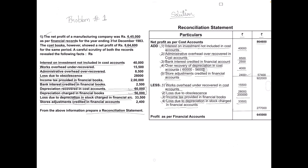Now add the five amounts to be added: 40,000 plus 8,500 plus 2,500 plus 4,000 plus 2,400. The total of these five amounts is 57,400. Add this to 8,64,600 and the total amount is 9,22,000.